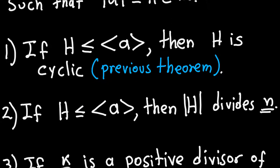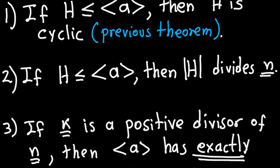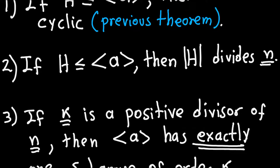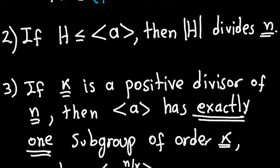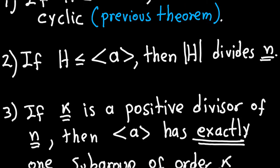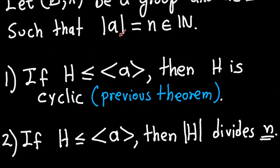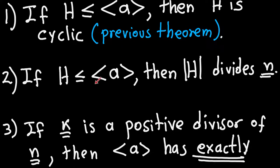There are two more parts of this theorem which I'm not going to prove, because they are long and a little bit tedious. The second part is the following: if you have a subgroup H of this cyclic group, then the number of elements in that subgroup divides N, where N is the number of elements in the group. N is the order of the element A, which is exactly the same as the number of elements in the cyclic group. So the order of any subgroup divides the order of the larger group.